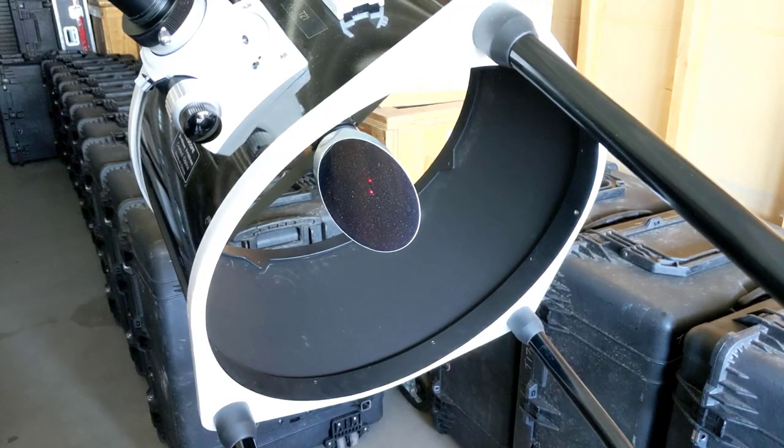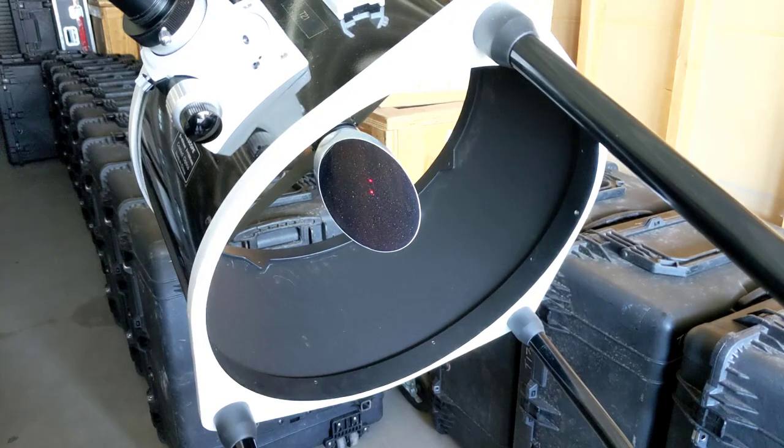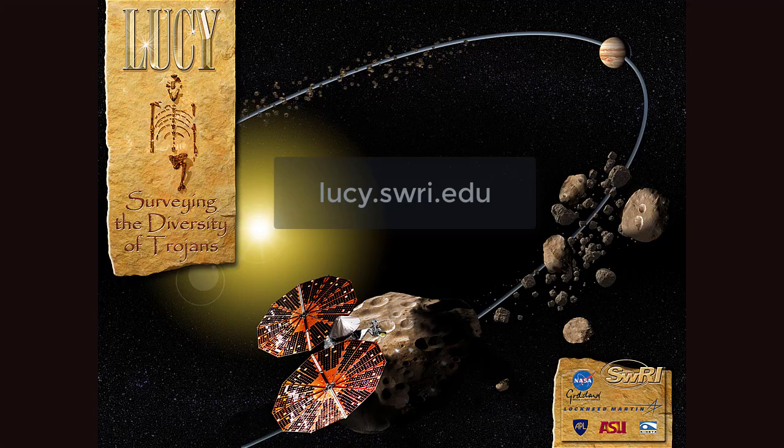Complete the process by removing the collimator and eyepiece holder. Take the battery out and put everything away. And that completes the collimation process. If you get good at it, it should take a couple of minutes after setting up the telescope to get everything collimated. All right. Let's go.